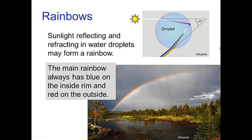The rainbow we see in the sky is a result of this effect: sunlight passes into water droplets, there's a bit of dispersion which separates the colors, the sunlight reflects off the back of the droplet, and when it exits the other side there's more dispersion, and so we see the rainbow spectrum. Because these angles are determined by the index of refraction of water, we always see them at the same angles — we always see blue on the inside rim of the rainbow and red on the outside rim.